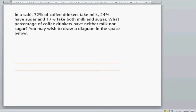In a cafe, 72% of the coffee drinkers take milk, 24% have sugar, and 17% have milk and sugar. What percentage of coffee drinkers have neither milk nor sugar? Let's draw a Venn diagram.